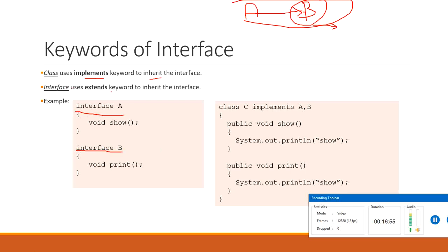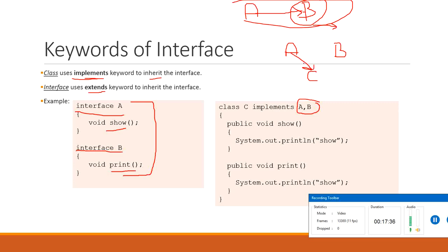To summarize: if an interface inherits from another interface, it uses 'extends'. If a class inherits from an interface, it uses 'implements'. For example, interface A has method show and interface B has method print. Class C implements both interfaces A and B — this is multiple inheritance. Class C will have all the methods from both interfaces plus its own, which is not possible through Java classes but is possible through interfaces.